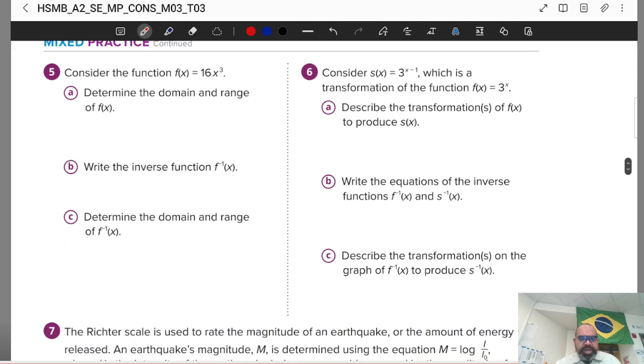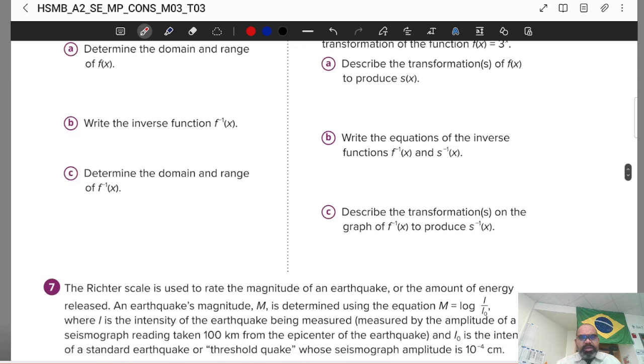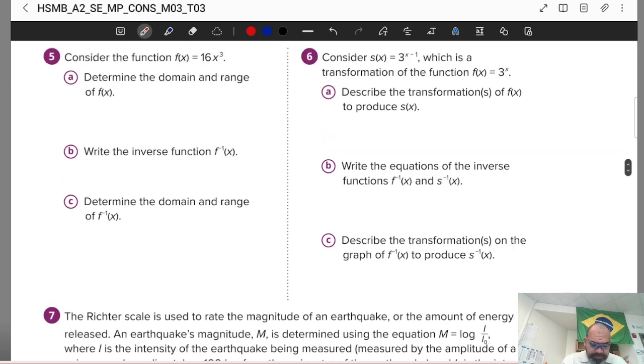Let's go next. Consider the function 16x to the third. Determine the domain and range. The domain is all real numbers. I don't have a restriction here. All real numbers. No problem here. The domain and range both - I don't have a problem here. They go both directions. Remember, it's like a third power function. No problem.